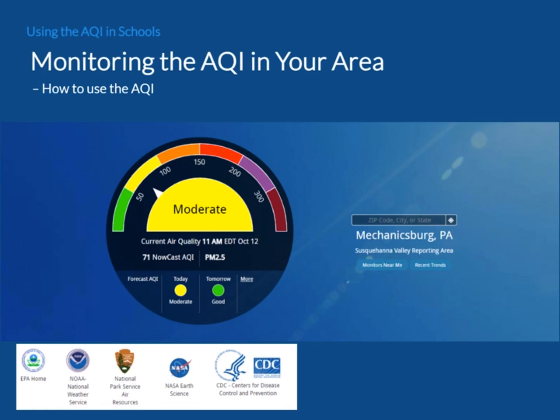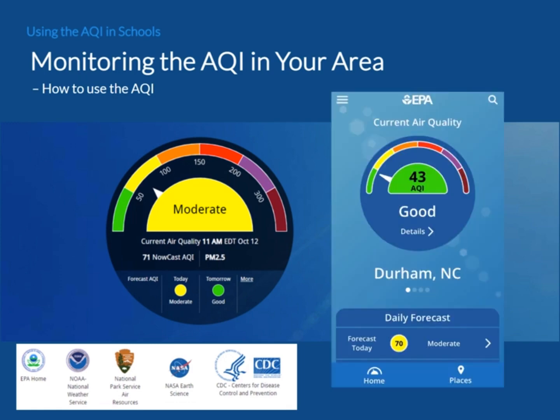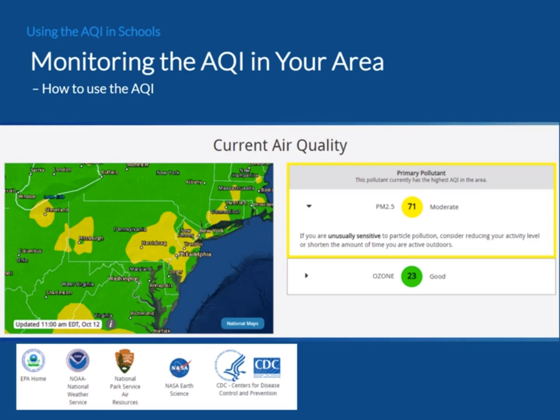Additionally, EPA's AirNow mobile app provides a simple way to quickly check current and forecast air quality information. This information is useful for planning daily activities and protecting the health of your staff and the children in your care. The app automatically displays the current AQI for your local area, or any area you wish to check, and allows you to store multiple areas for quick reference.